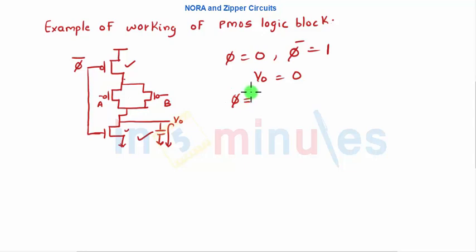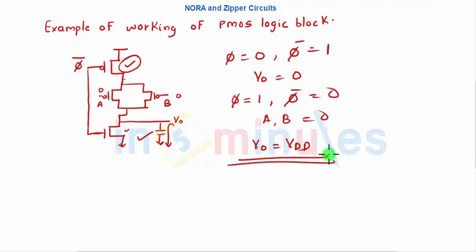Now when phi equal to 1 means phi bar equal to 0, this PMOS transistor will turn on. Let's say A and B both were 0s as well. So all these PMOSs are on, it will pull the output towards Vdd. So we have got Vout equal to Vdd and we can similarly see for all the different cases of A and B and identify our outputs. This is the working of the PMOS logic block.